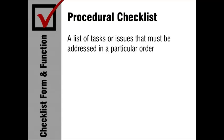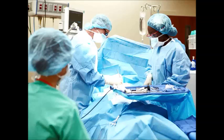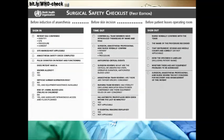A procedural checklist is a list of things that should be addressed in a particular order. Scriven called these sequential checklists, but they're really about following a process to complete a task. The surgical safety checklist is a prime example of a procedural checklist.